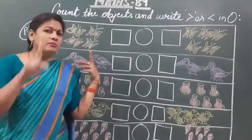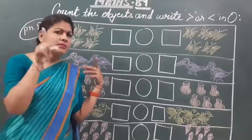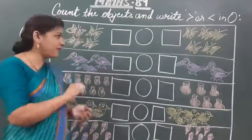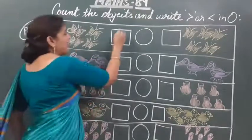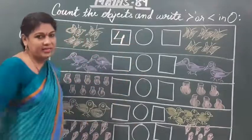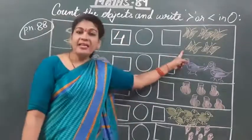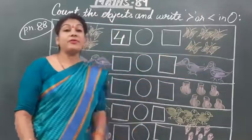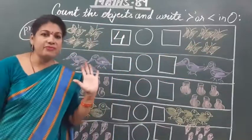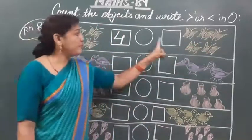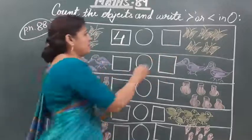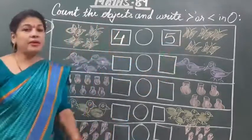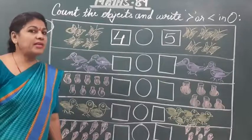How to write four? Like this. Then on the other side box — very good. I am writing number four here. Then on the second side: one, two, three, four, five — there are five butterflies. Then we will write in this box: here I am writing the number five.